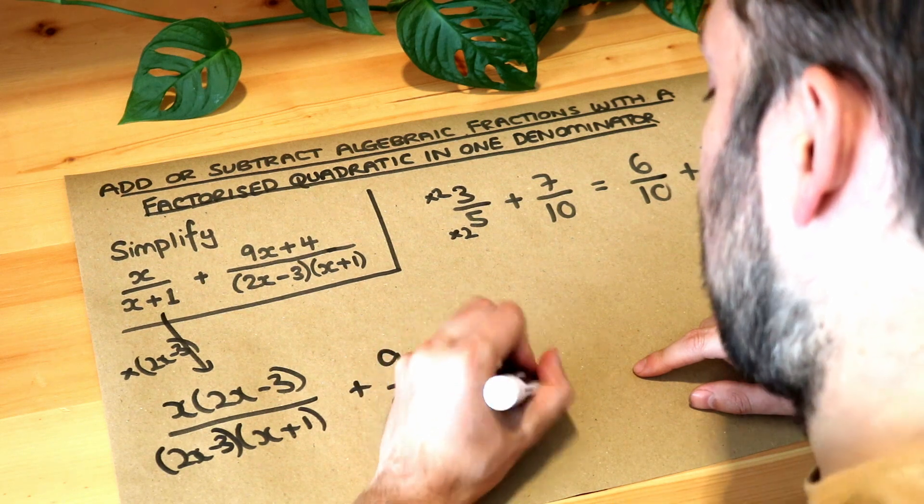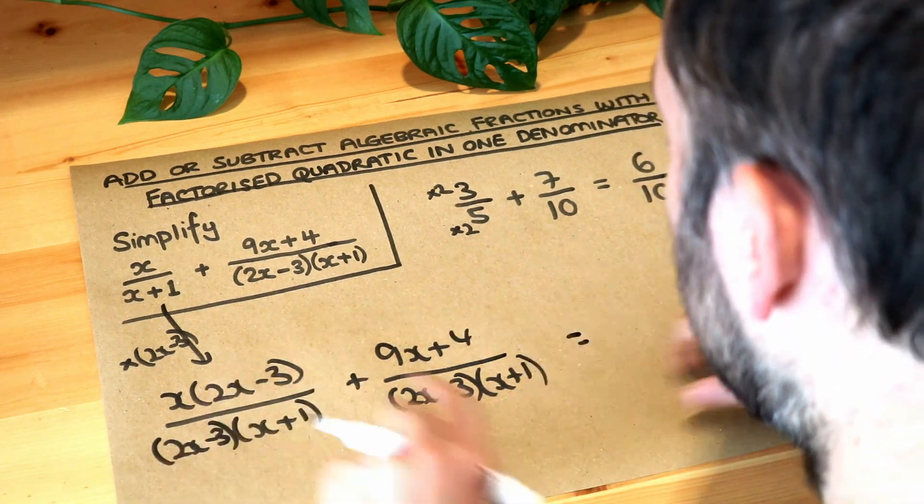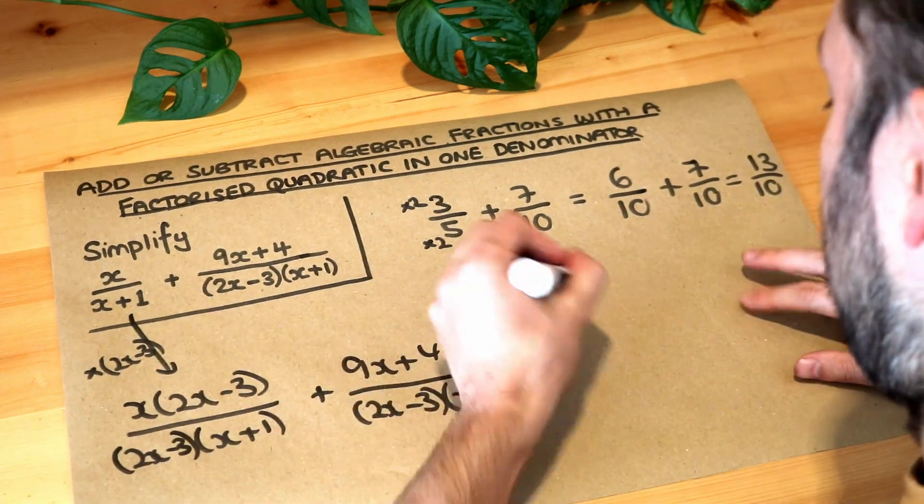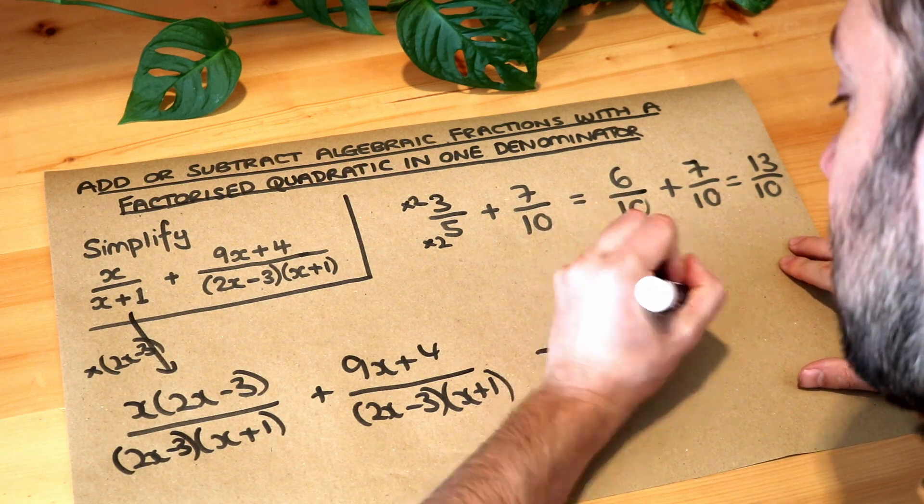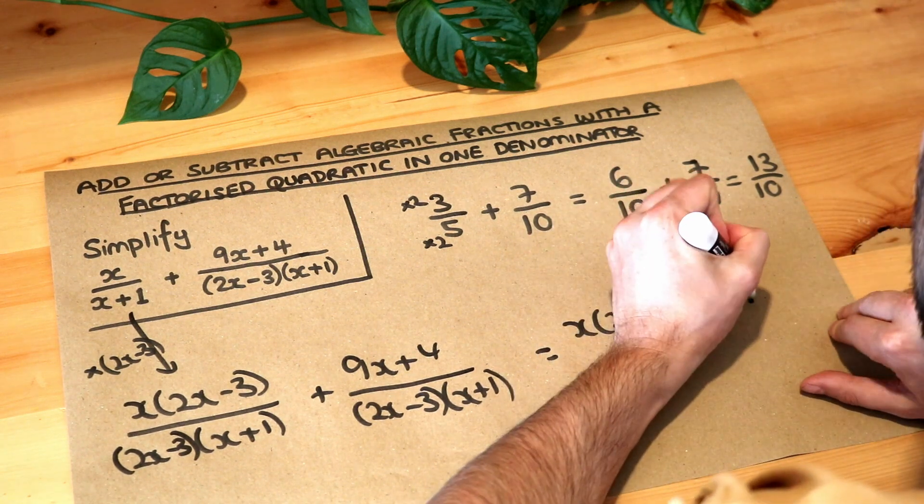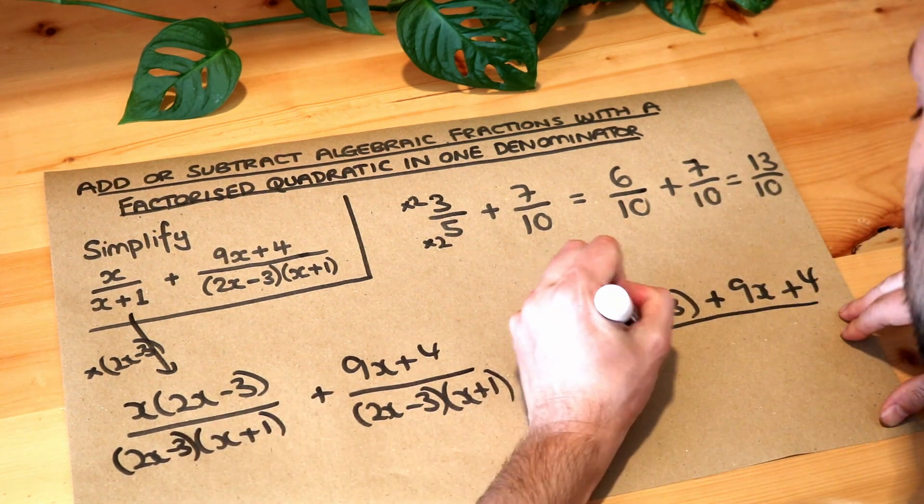So now this is great because we've got the same denominator which means I can just add the numerators so we've got x brackets 2x minus 3 plus the 9x plus 4 all over the 2x minus 3 x plus 1.